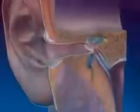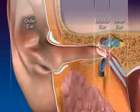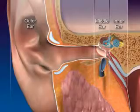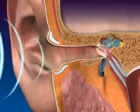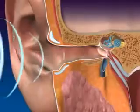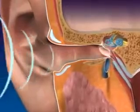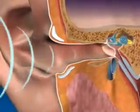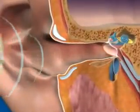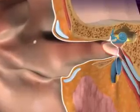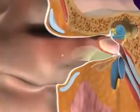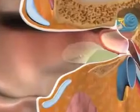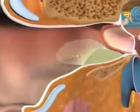The ear has three parts: the outer ear or auricle, the middle ear, and the inner ear. The auricle, the visible part of the ear, collects sound waves and directs them to the auditory canal. The auditory or ear canal is lined with cilia and ceruminous glands. The earwax from the ceruminous gland and the cilia protect the ear from entry by foreign matter.